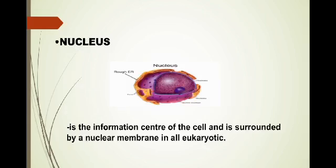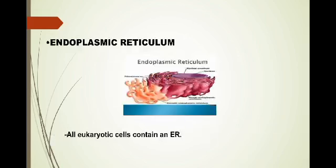The first part is the nucleus. When we say nucleus, it is the information center of the cell and is surrounded by a nuclear membrane in all eukaryotic.